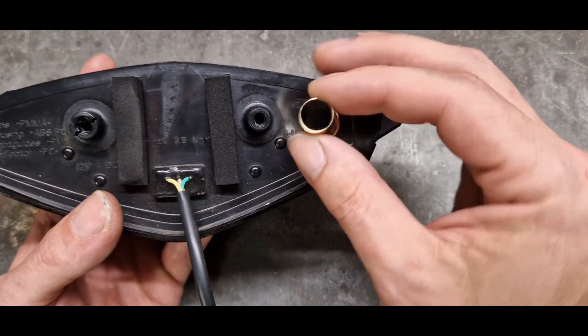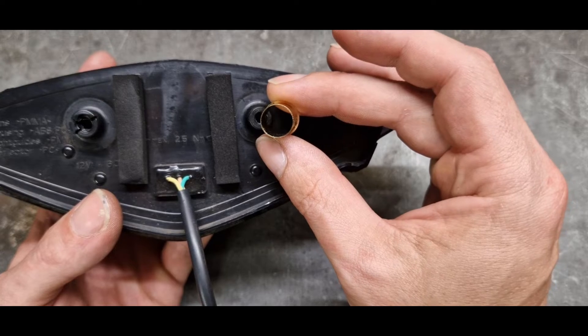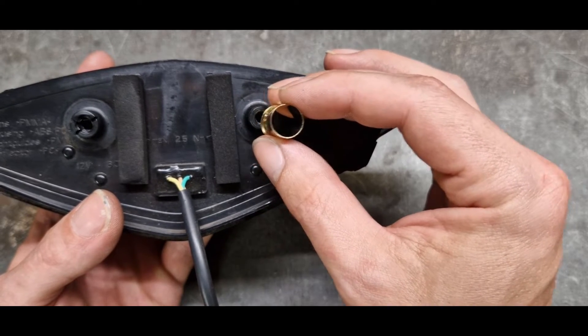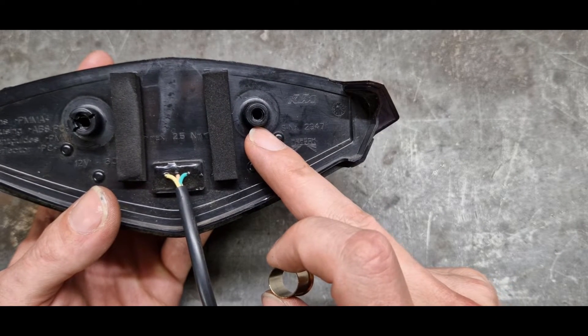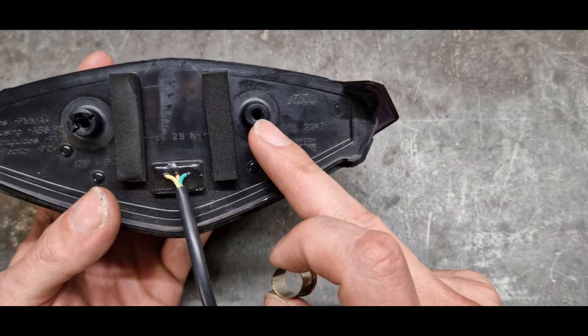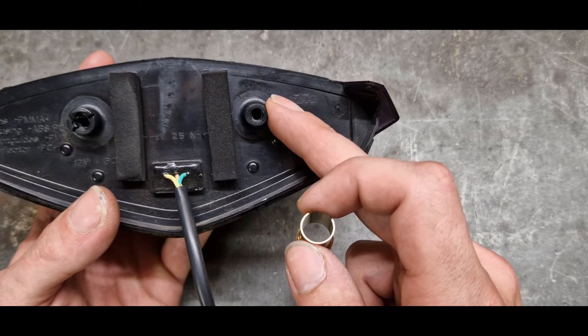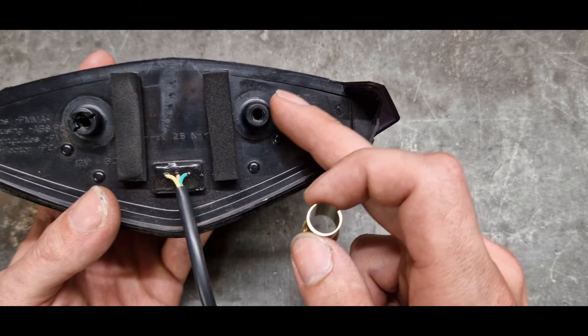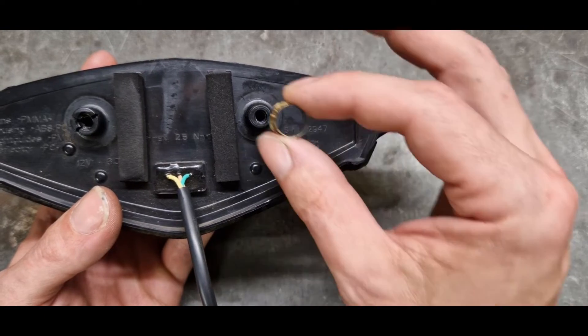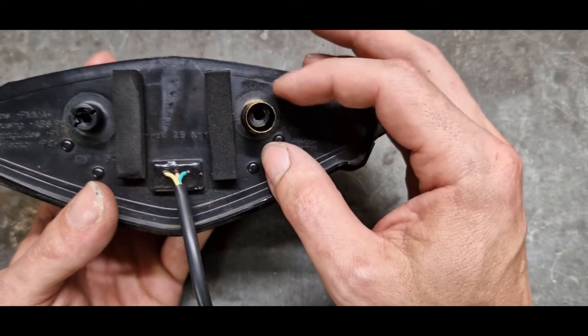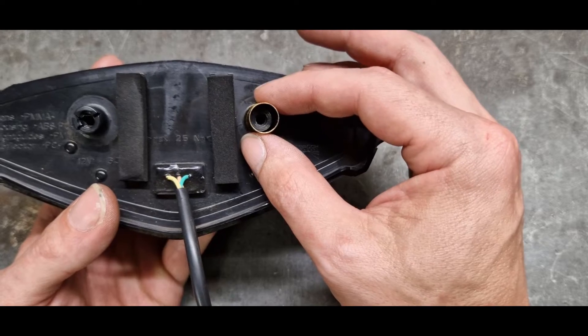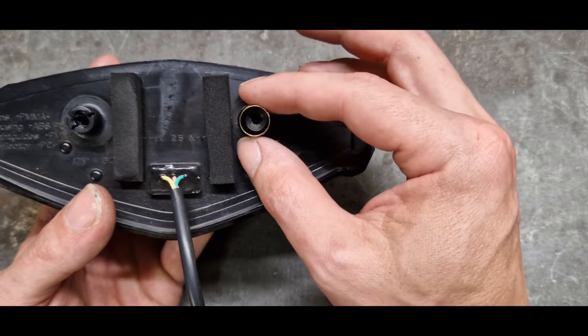The only problem is, this wall thickness needs to be really thin. This part here goes through a rubber seal. So the outer diameter needs to stay nearly the same. So the wall thickness should be around 0.2mm, maybe 0.3mm.